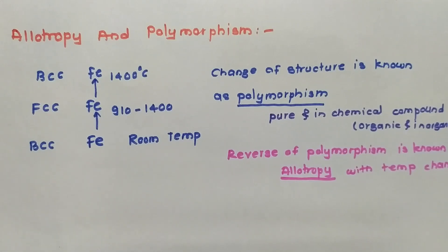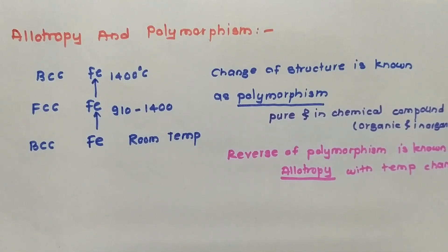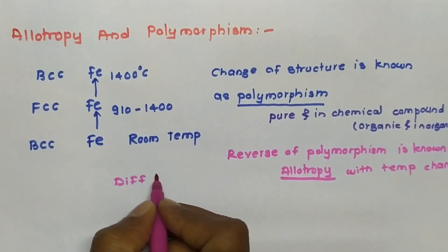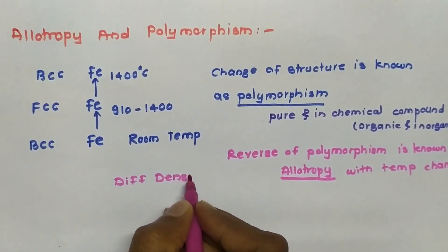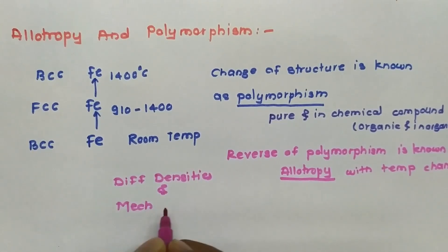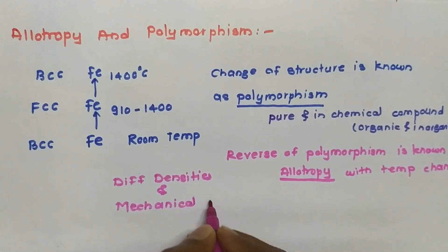Materials of the same composition but different crystal structure are known as polymorphs — analogous to isomers, which are molecules of identical composition with different structure. These polymorphs have different densities and mechanical properties.